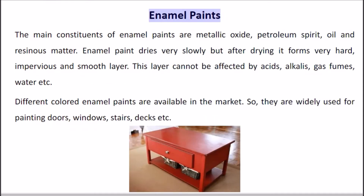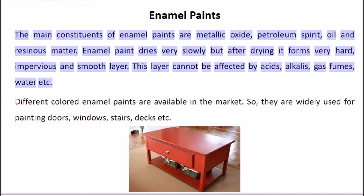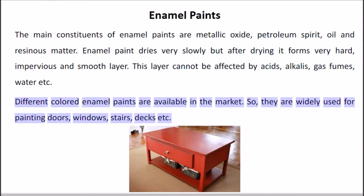The main constituents of enamel paints are metallic oxide, petroleum spirit, oil, and resinous matter. Enamel paint dries very slowly but after drying it forms a very hard, impervious and smooth layer. This layer cannot be affected by acids, alkalis, gas fumes, or water. Different colored enamel paints are available in the market, so they are widely used for painting doors, windows, stairs, and decks.